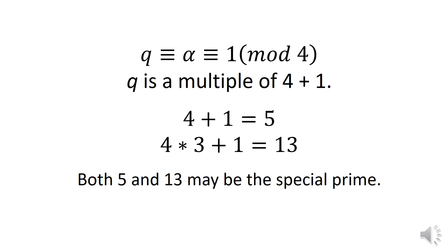That modulus means that prime q is a multiple of four plus one. Four plus one is five. Four times three is twelve plus one is thirteen. Both five and thirteen may be the special prime.